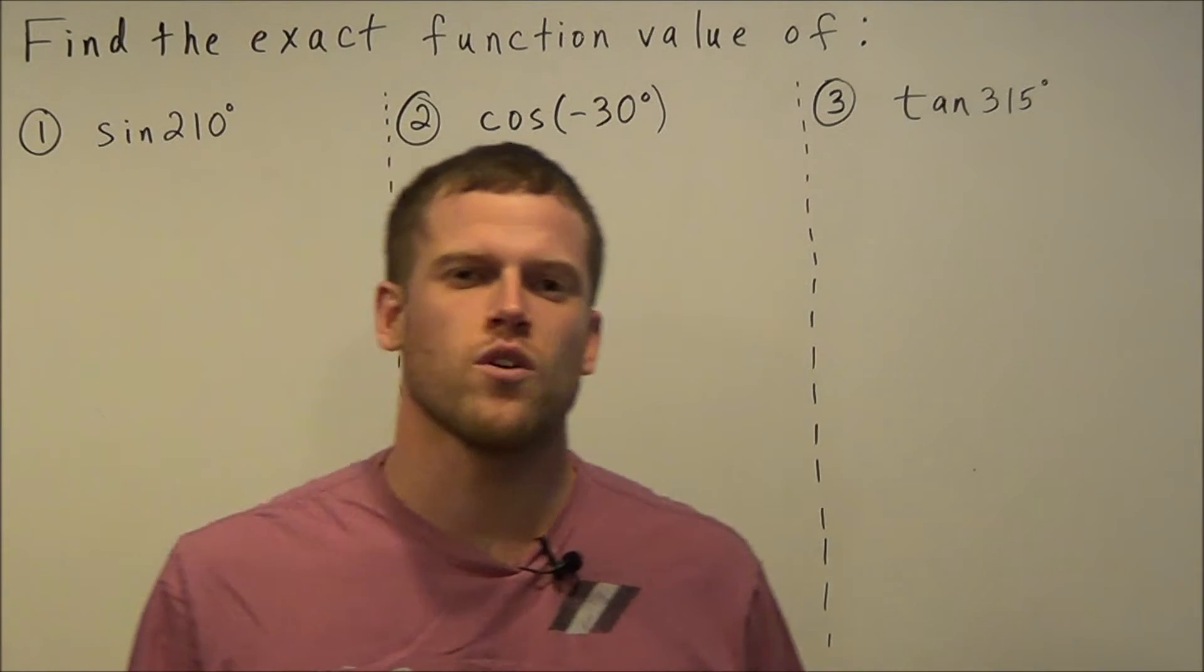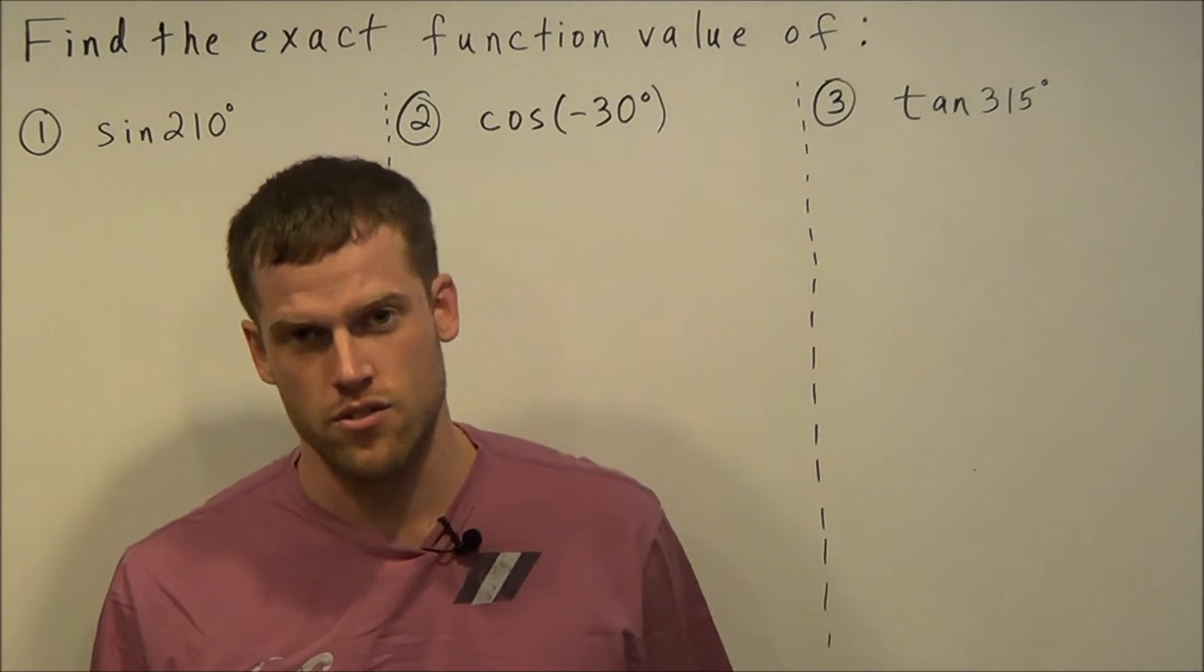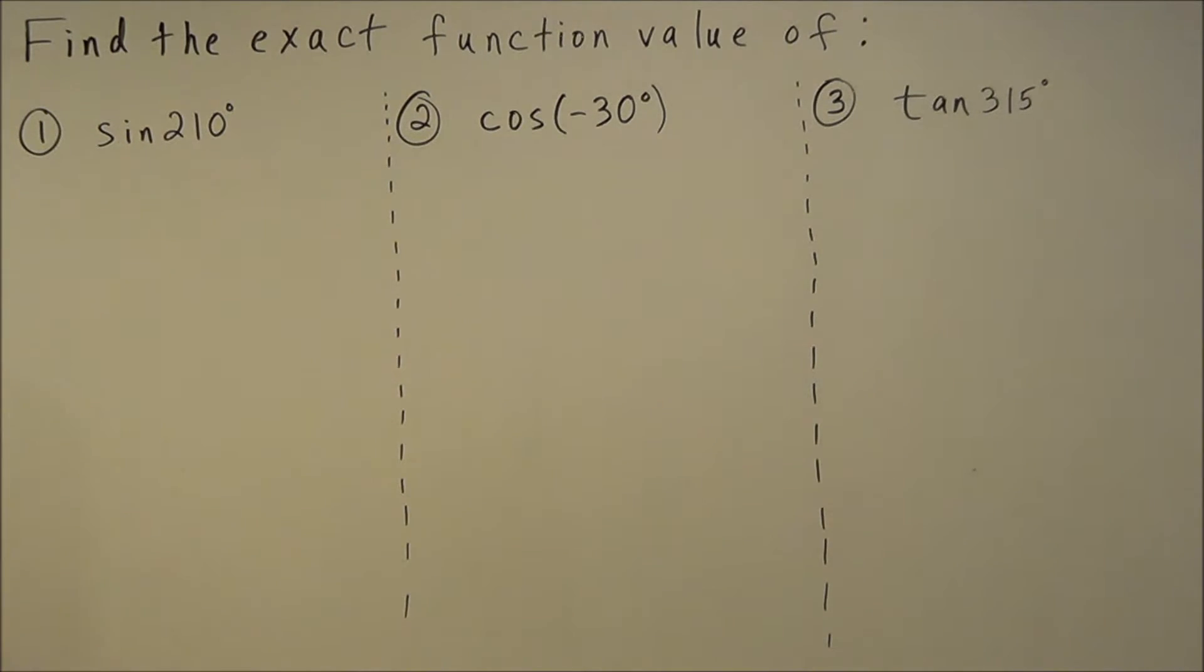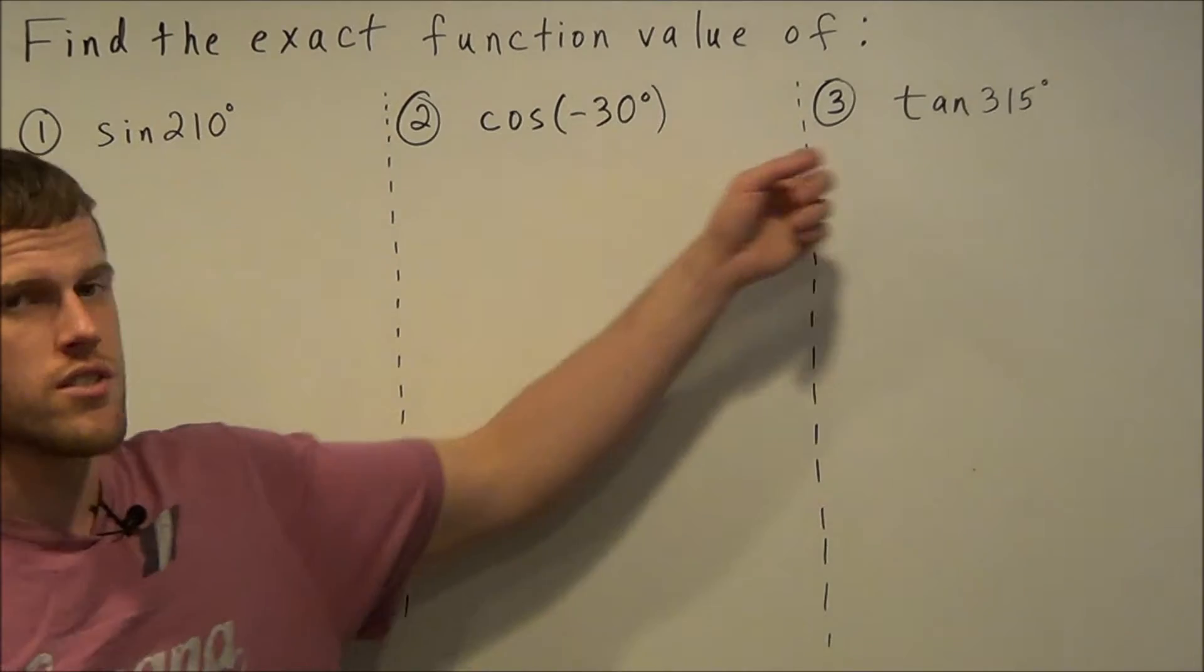Hi, my name is Vincent and today I want to take a look at how to use reference angles to evaluate trig functions. We have three questions: find the exact function value of sine of 210 degrees, cosine of negative 30 degrees, and tangent of 315 degrees.